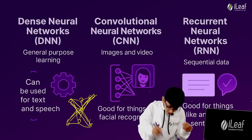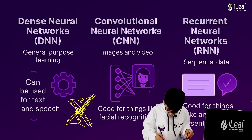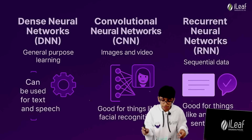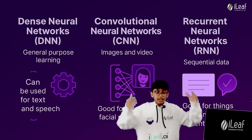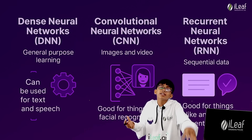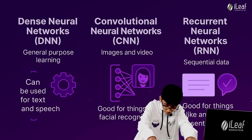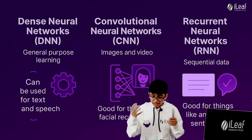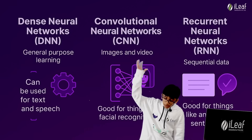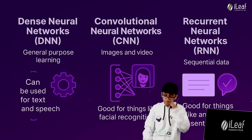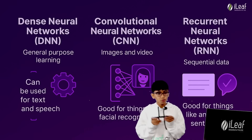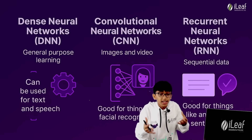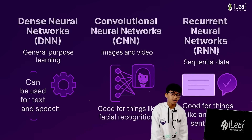Next is CNN — Convolutional Neural Networks. This is what was used before and is mainly used for images and videos, like your phone's face unlock. Then there is RNN — Recurrent Neural Networks. This is for recurring data. For example, two dogs that look similar are recurring patterns, and this is where RNNs come in. RNNs can also be used for text and speech.